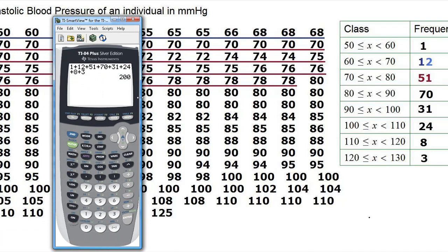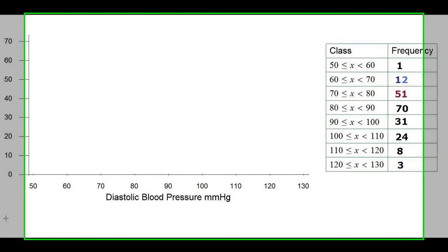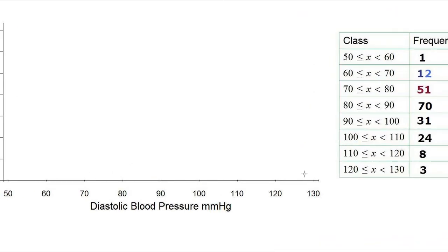After we have created this frequency table, let's go ahead and make the axes. On the horizontal scale we have the classes indicated for the diastolic blood pressure, and on the vertical scale we have the frequencies. They're ranging from 1 to 70, so I went ahead and made the scales accordingly.